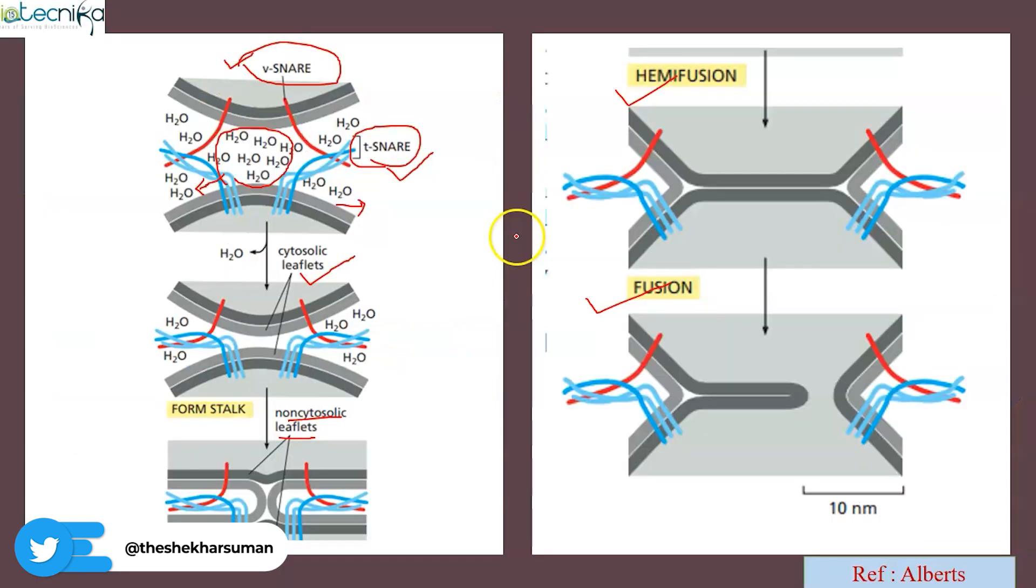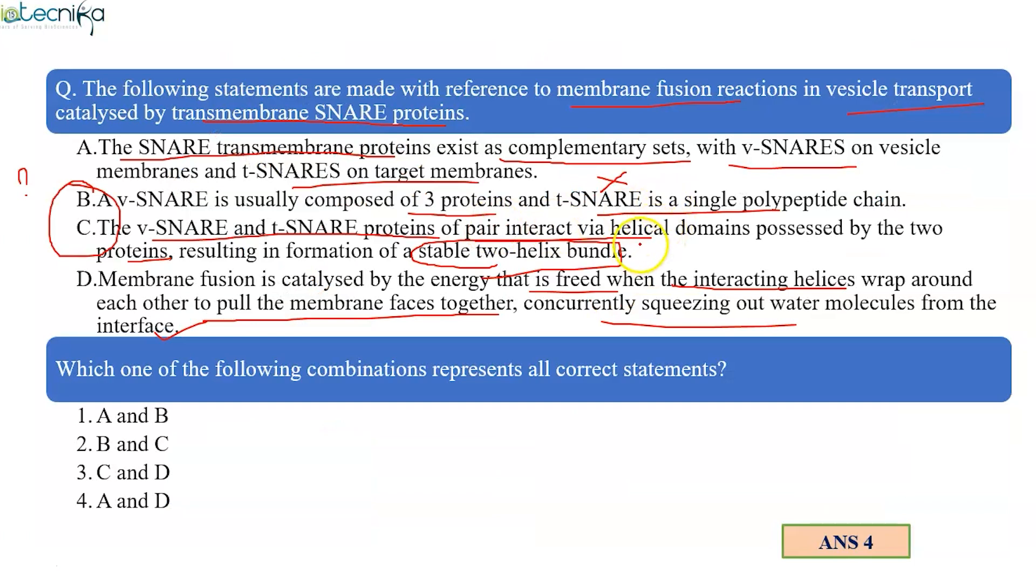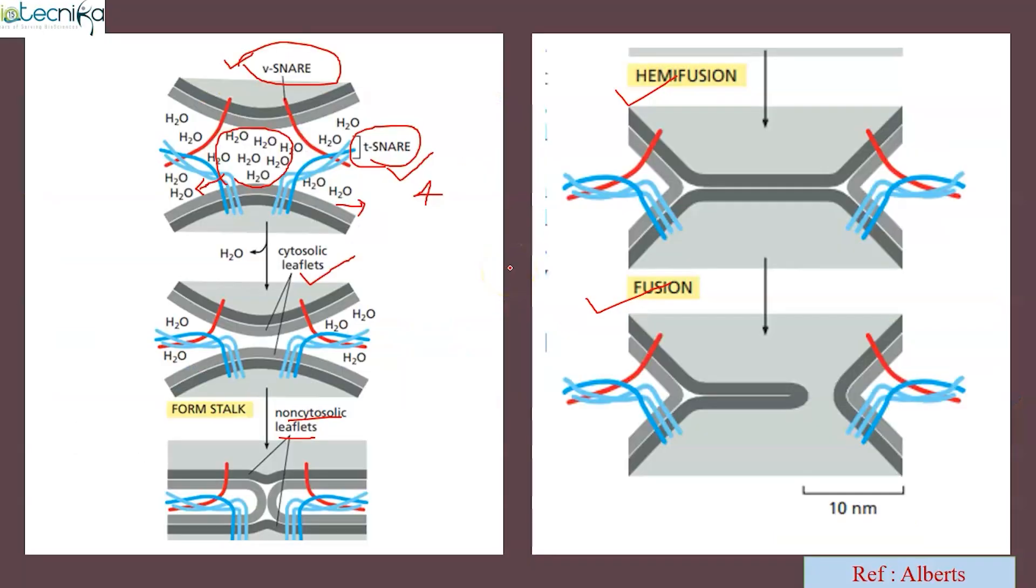If you look into this image and combine these two, we are getting a four-helix bundle. That becomes statement C. That's why we have eliminated statement C as well, and this is squeezing the water out of the interface. v-SNARE and t-SNARE. So statement A and D are correct.